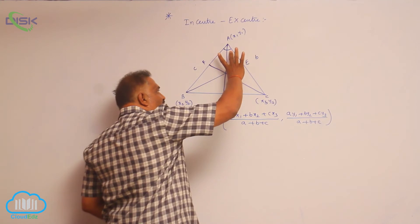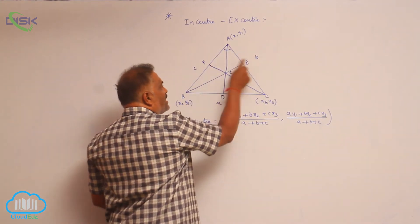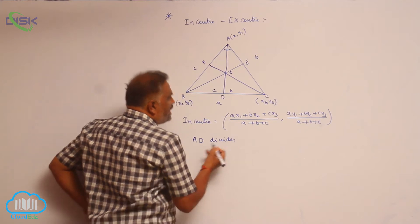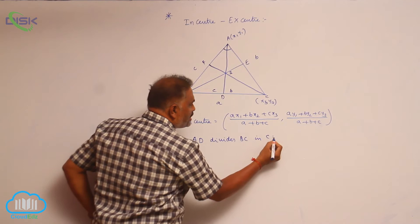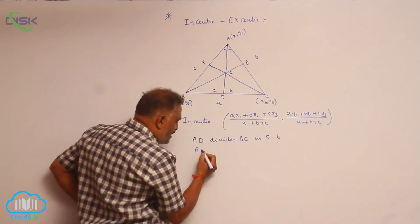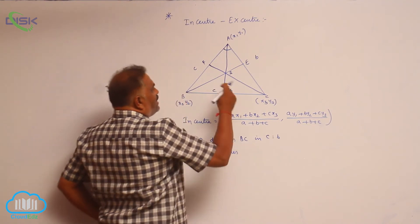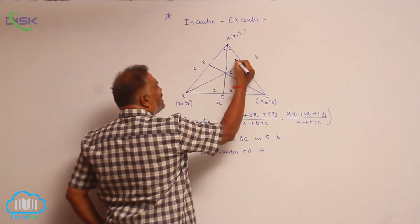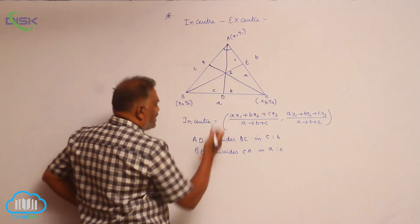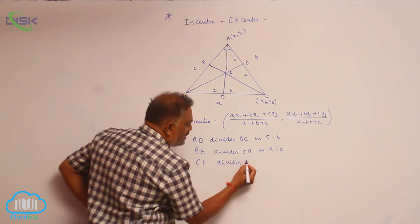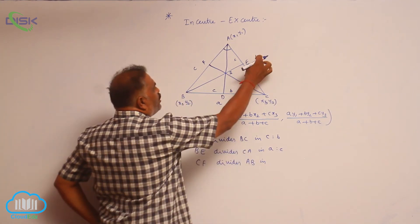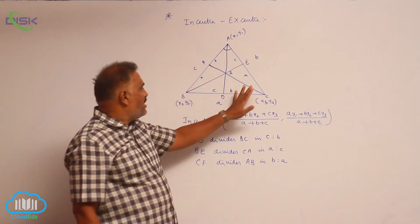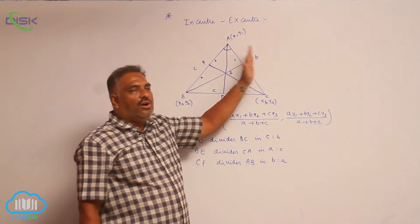AD divides BC in the ratio of its adjacent sides, that is C : B. BE divides CA in the ratio of its adjacent sides A : C. CF divides AB in the ratio B : A. So every internal angular bisector divides the opposite side in the ratio of its adjacent sides.